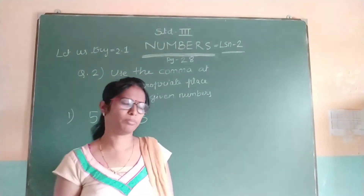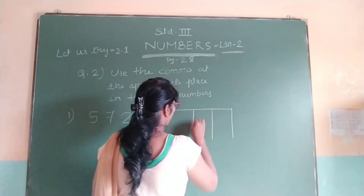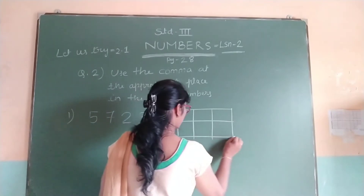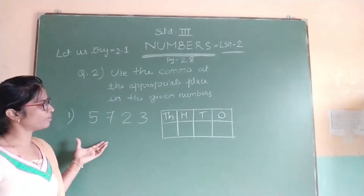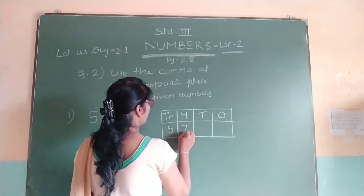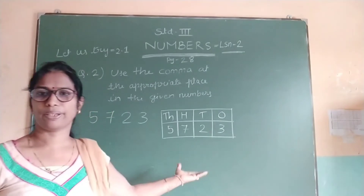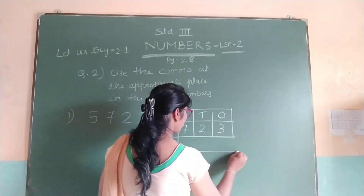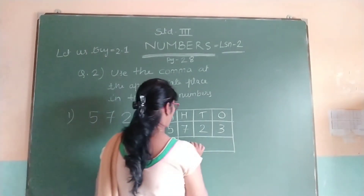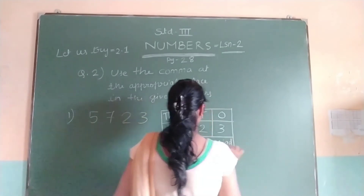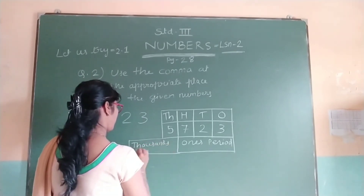Now let us take one more example. This is a 4-digit number; we will write this number and follow the same steps. This is 1s place, this is 10s place, this is 100s place, and this is 1000s place. So 7 is in 100s place, 2 is in 10s place, and this digit is in 1s place. Before placing the comma, first we will separate the 2 periods. The 1s, 10s, and 100s come in the 1s period, and the 1000s comes in the 1000s period. We are supposed to insert the comma between the 2 periods.